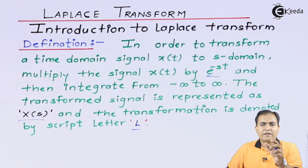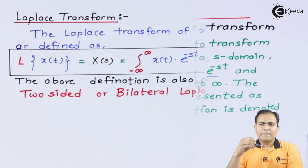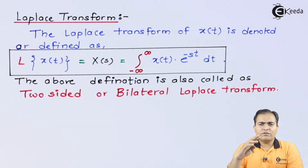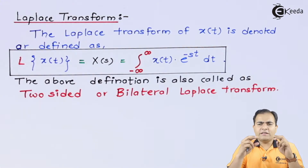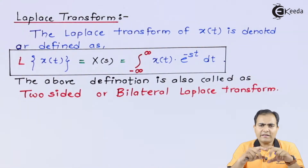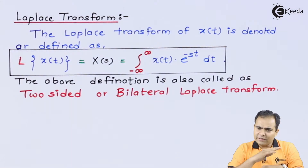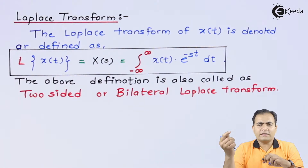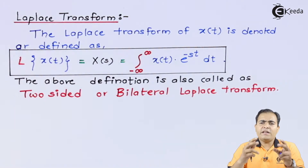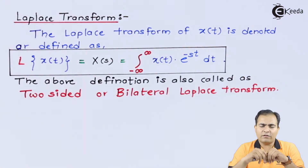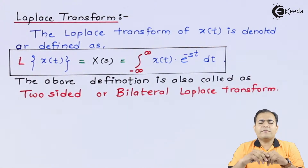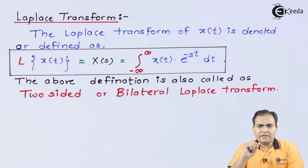Now we will study how to write the equation of Laplace Transform. The Laplace Transform definition is divided into two parts. We can integrate the product of X(T) and the exponential function e to the power minus S·T in two ways: from minus infinity to infinity, or from 0 to infinity for a right-handed signal. That is why the Laplace Transform definition is divided into two parts. The first is the bilateral or two-sided Laplace Transform.